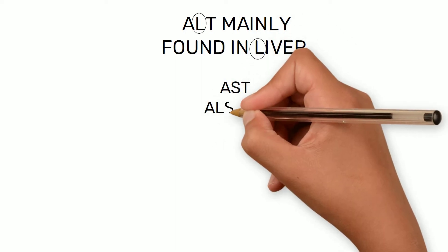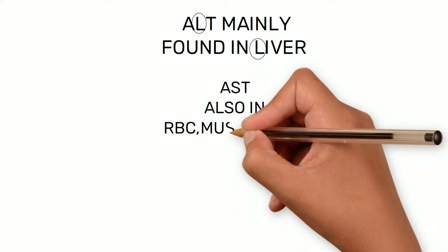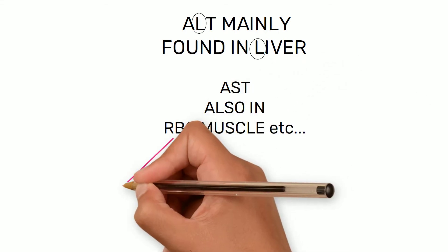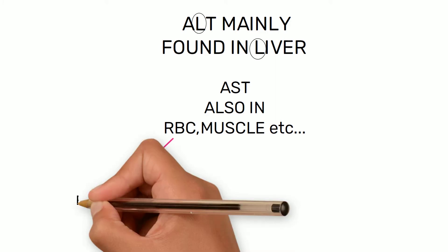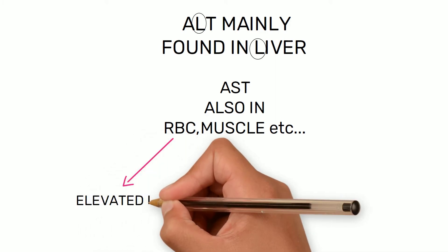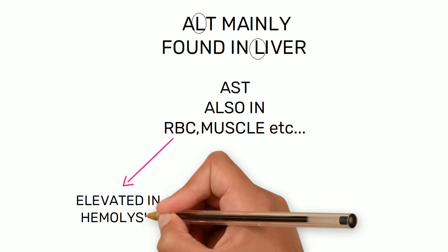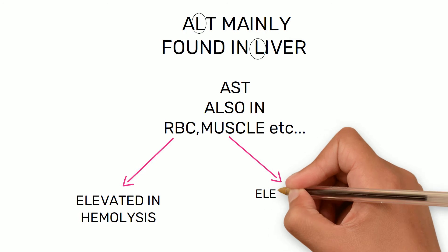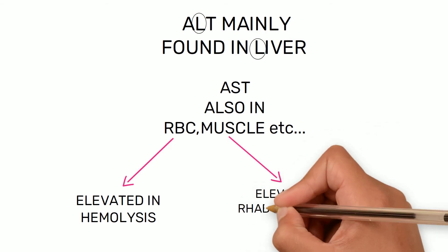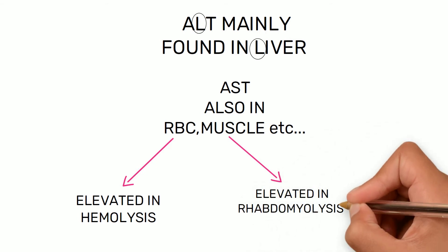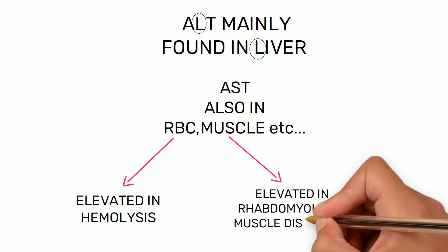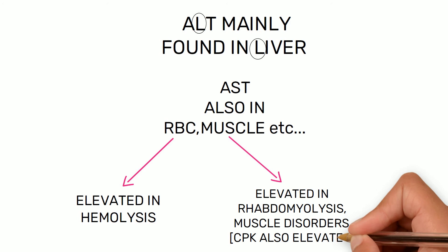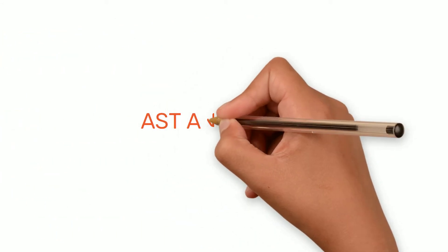AST is also found in RBCs, muscle, etc. in significant amounts, so it is also elevated in hemolysis and rhabdomyolysis and muscle disorders. However, in these cases CPK will also be elevated. Following strenuous exercise, both AST and ALT may be elevated.